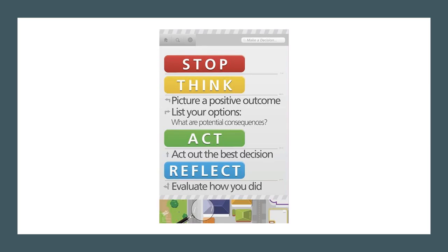After you consider the consequences of each option, the third step is to act — act on the best decision. Once you've acted, the last step is to reflect. Think about your decision making, evaluate how you did, and ask yourself if you made the right choice. If it didn't turn out as expected, consider what you could do differently next time. Remember, everybody makes mistakes, but it's what we do with those mistakes — when we learn from them and change our actions — that's how we learn to make the right decisions.